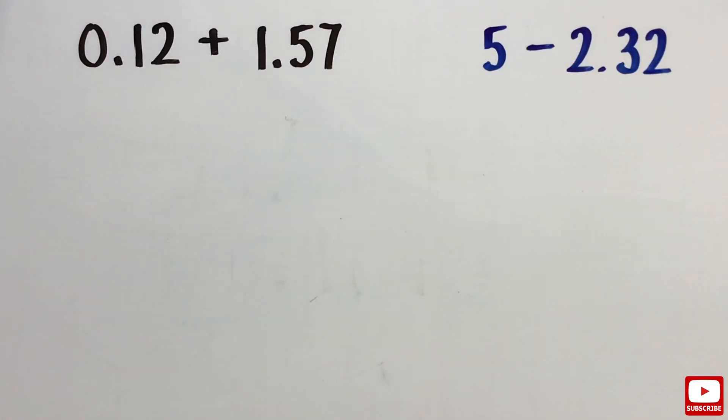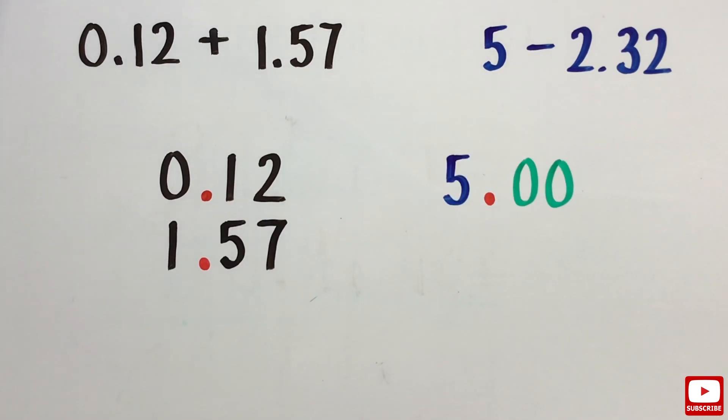So when adding or subtracting decimal numbers, we must keep in mind that we write the numbers under one another in such a way that the decimal points line up. And when we do this, the digits in each place value will also line up.